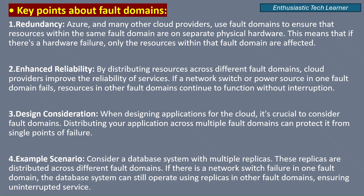Consider a database system with multiple replicas. These replicas are distributed across different fault domains. If there is a network switch failure in one fault domain, the database system can still operate using replicas in other fault domains, ensuring uninterrupted service.